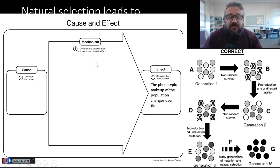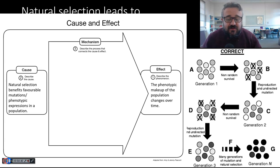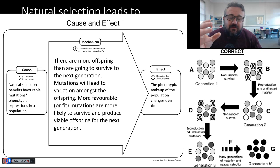So, the phenotypic makeup of a population changes over time. That's the effect. The cause for that is that natural selection benefits favorable mutations slash phenotypic expressions in a population. All right. So, I've now got the cause and the effect. But I'm explaining it. So, I need more. That would be a description, at best. So, then we write our explanatory sentences.